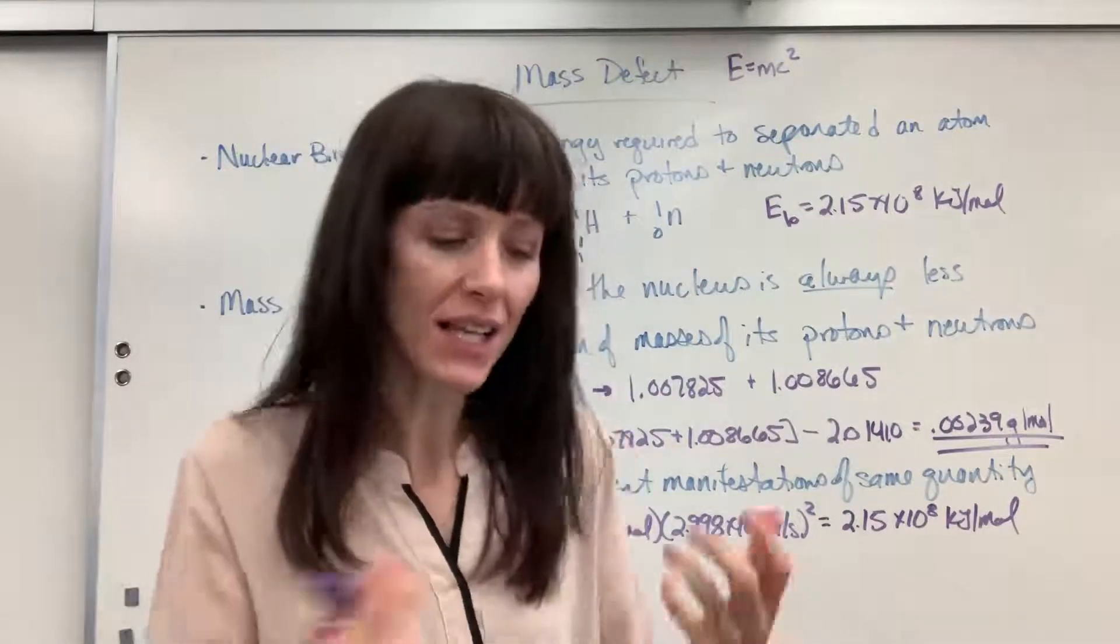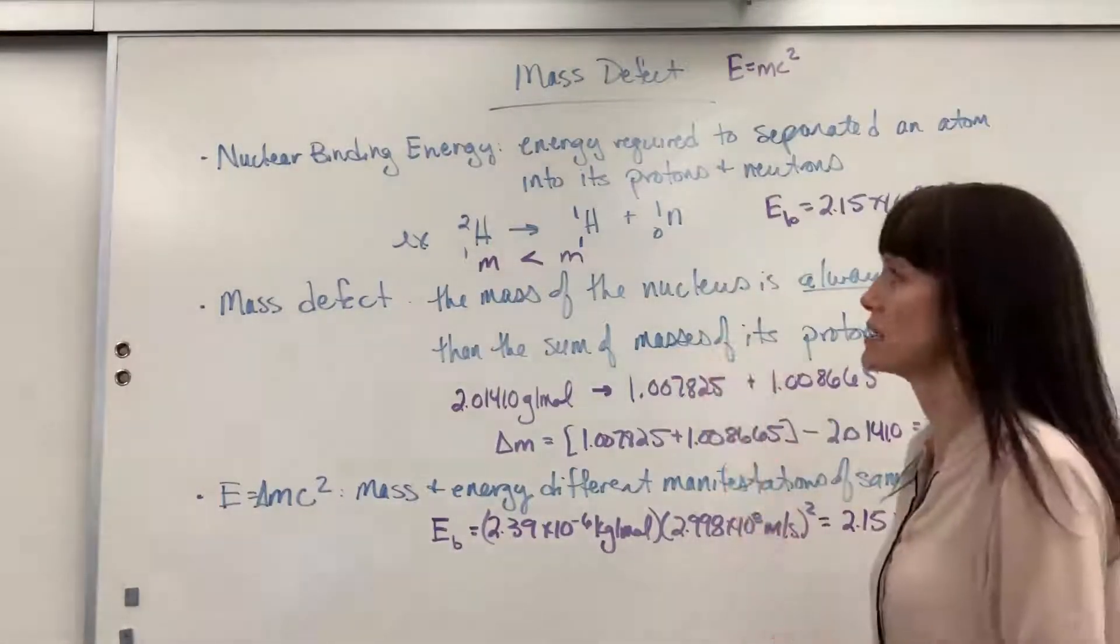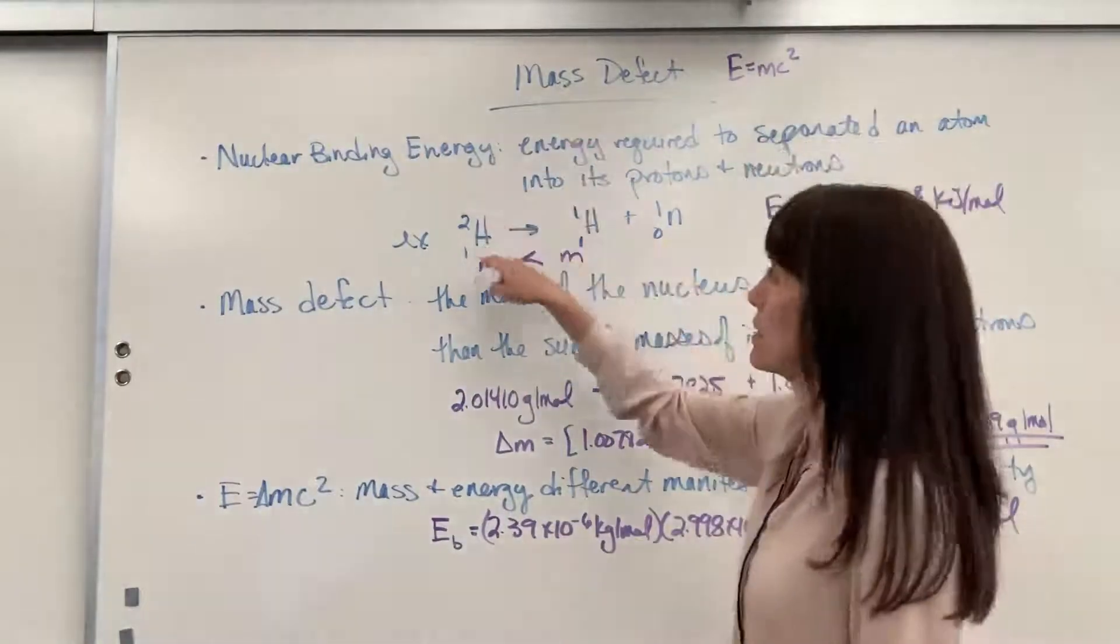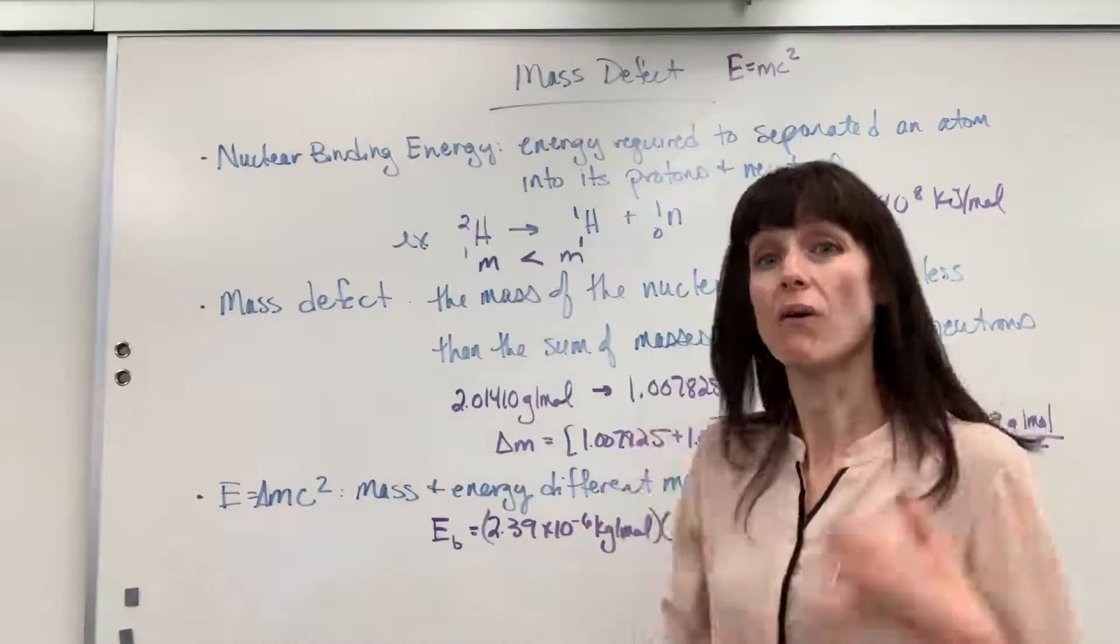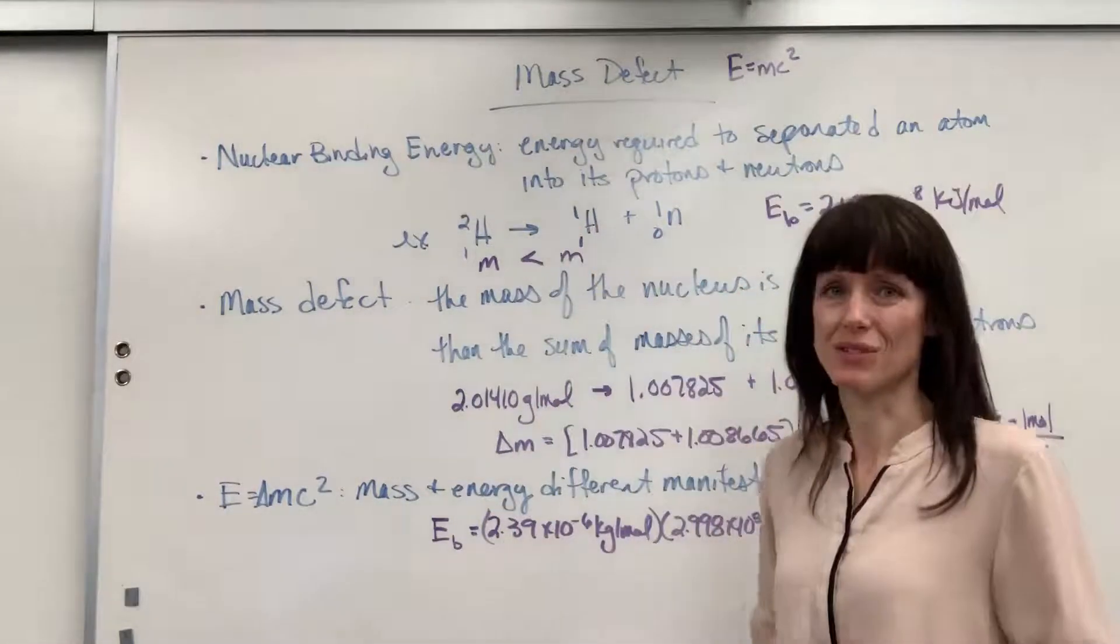That's the energy that's holding together that proton and neutron in the deuterium. Is that exciting? Did it, like, give you cold chills maybe? I think it's awesome. All right, so there's the mass defect. Your big takeaways. The mass of the isotope will always be less than the sum of the masses of the total protons and neutrons.